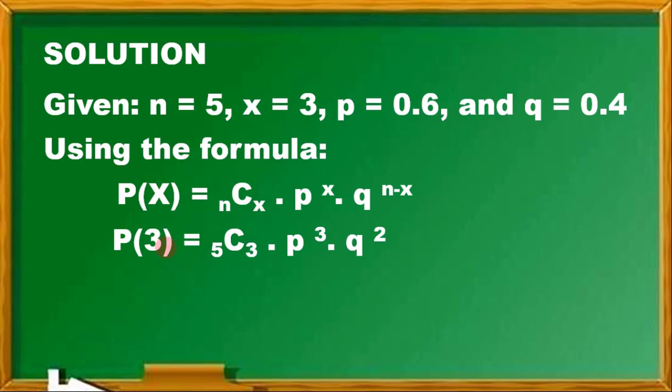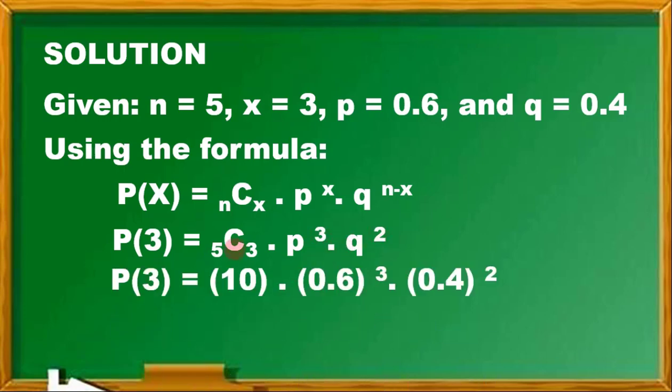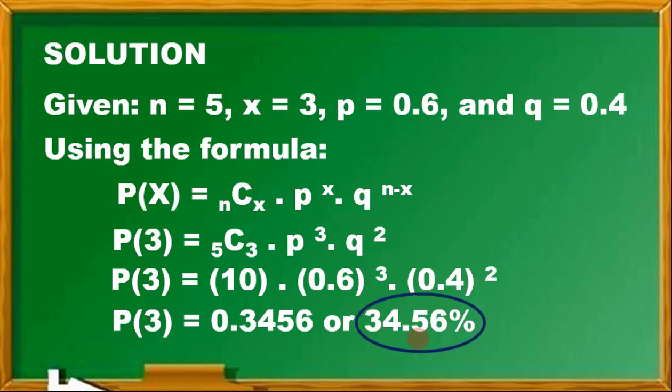Using the formula, we have P(3) equals 5C3 times P raised to 3 times Q raised to 2. We know that 5C3 is 10, then 0.6 raised to 3—you may use your calculator to verify—times 0.4 raised to 2. Meaning, you type 0.6 first, then raise it to 3, equals, then times 0.4 raised to 2, equals, times 10. Then we have 0.3456 or we can convert this to percent as 34.56%.